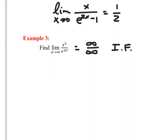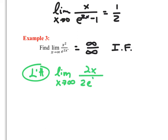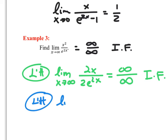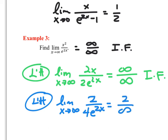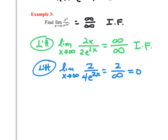On example three, plugging in infinity gives infinity over infinity — an indeterminate form — so L'Hopital's Rule applies. Taking derivatives: the limit as x goes to infinity of 2x over 2e^(2x). Direct substitution still gives infinity over infinity, another indeterminate form. So we apply L'Hopital's Rule again. The limit as x goes to infinity of 2 over 4e^(2x). Direct substitution gives two over infinity, which equals zero. Therefore, the limit as x goes to infinity of x² over e^(2x) equals zero.